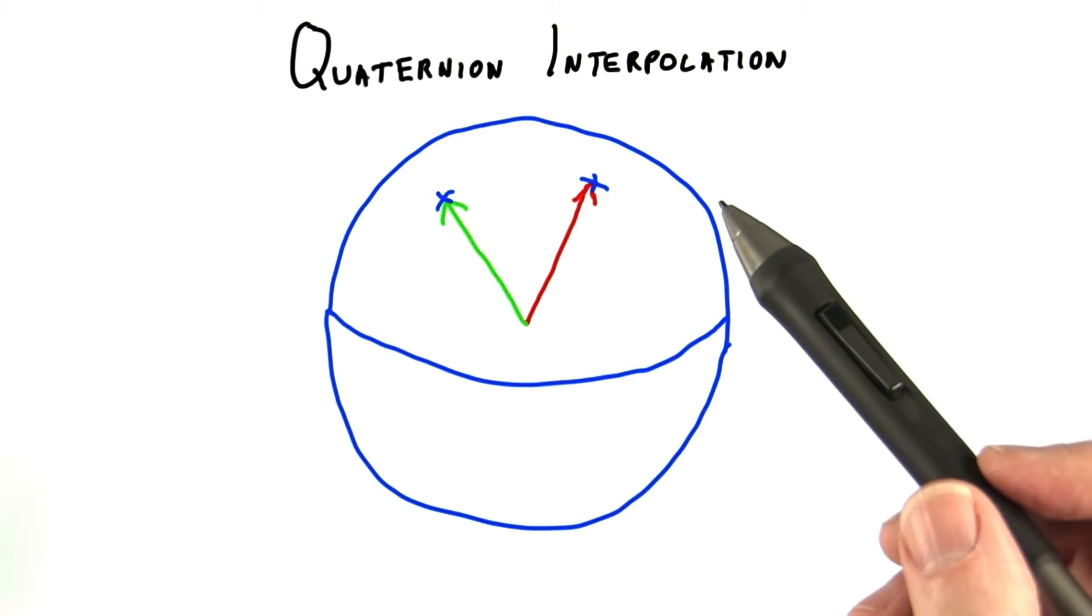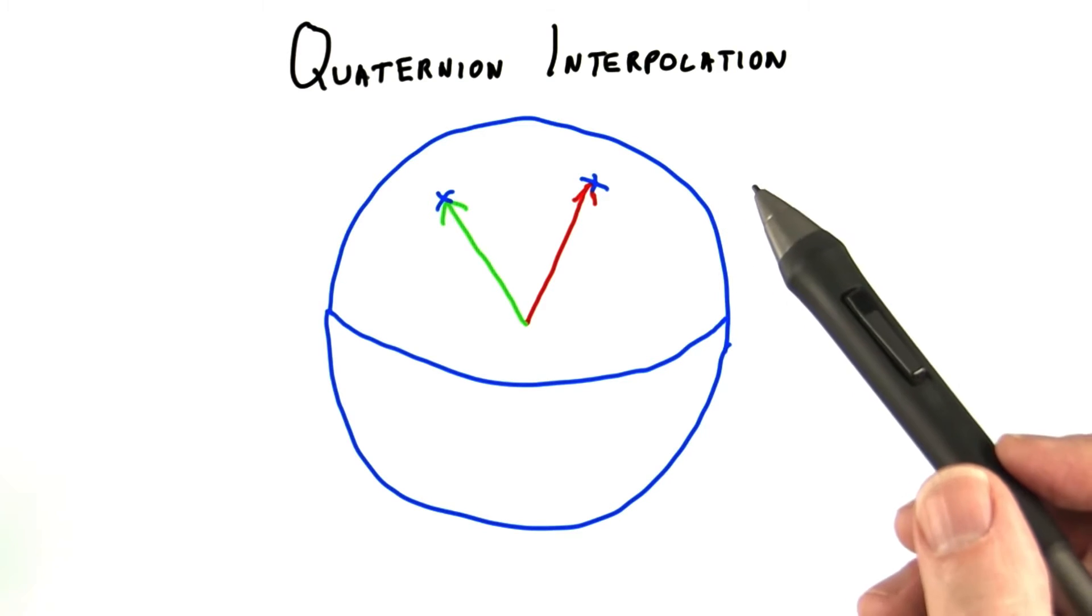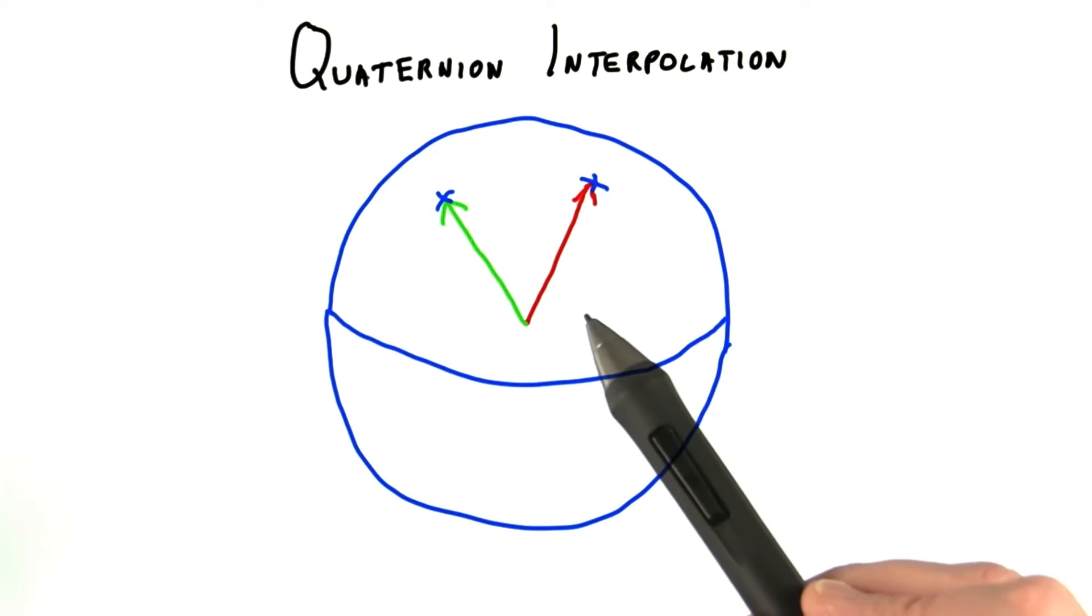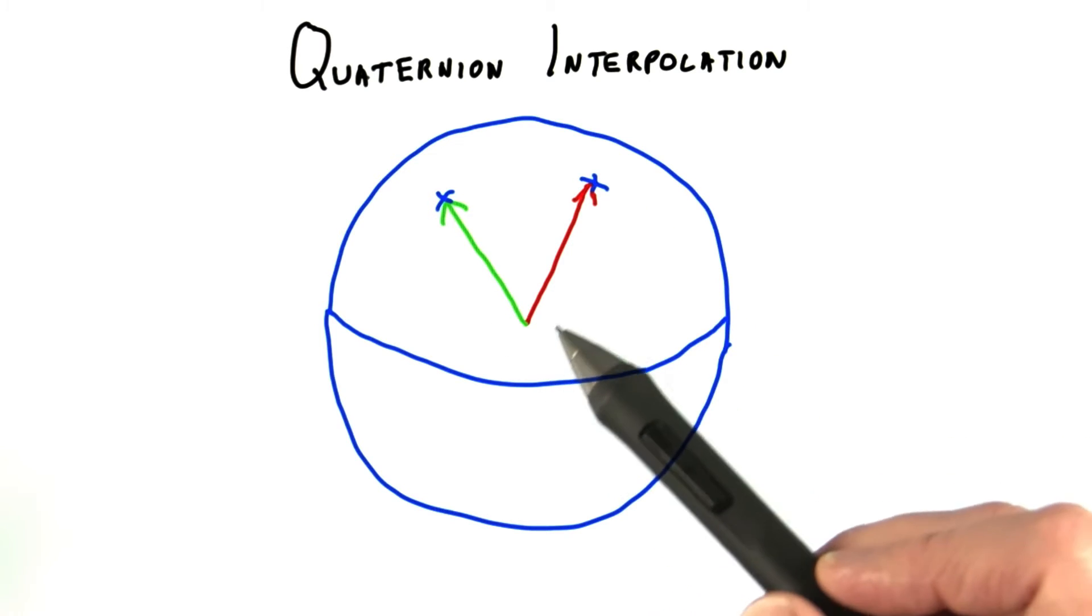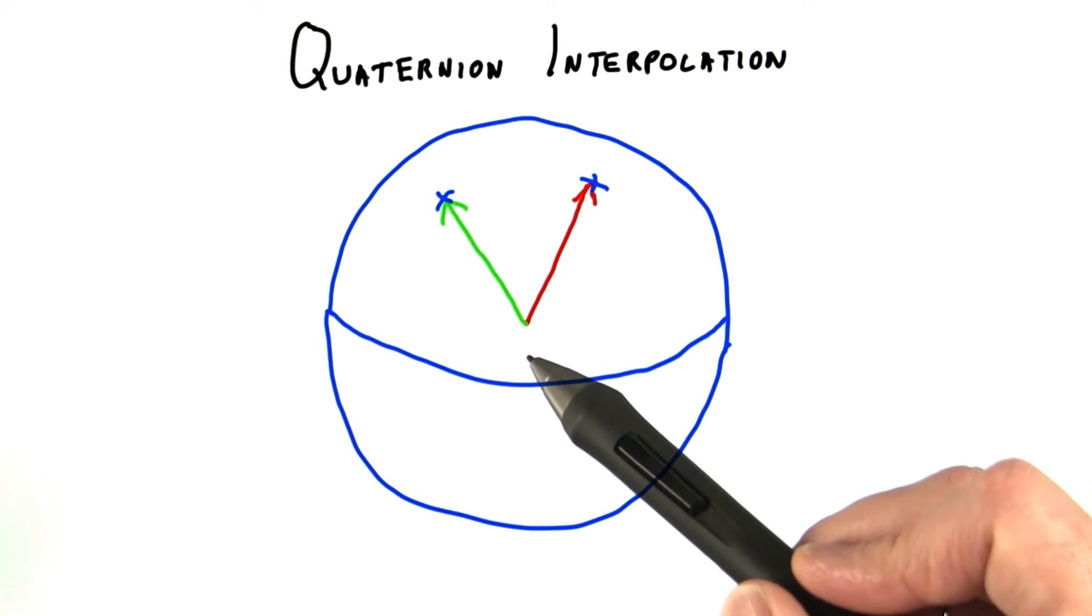They get a lot of use in animation because you can easily interpolate between one orientation and another. Think of two vectors poking through a sphere at the origin. If you want to change your orientation and go from one vector to the other, there are a number of ways you can do it.